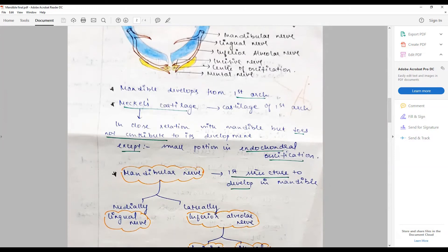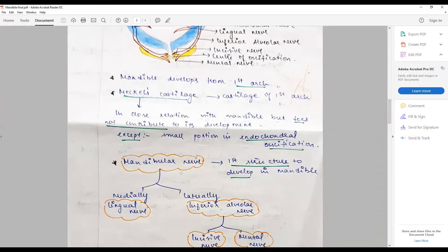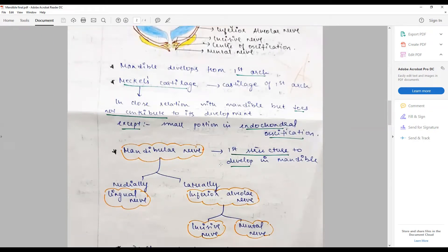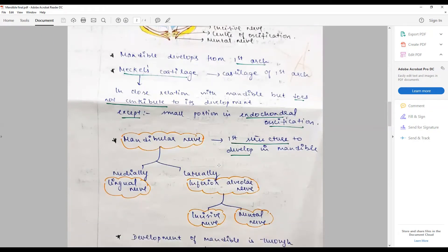The mandibular nerve is the first structure to develop in the mandible, and along this the development of the entire mandible is stimulated. Over the bed on which Meckel's cartilage gives place, the mandible develops in a bed of Meckel's cartilage.